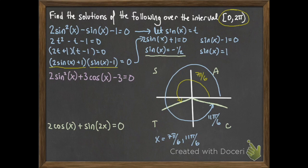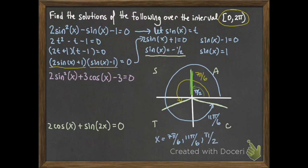For sine x equals 1, that only occurs at π/2. So the three solutions within 0 to 2π are x equals 7π/6, 11π/6, and π/2. When you plug any of these into the original equation, you get 0. That's the complete solution set for this interval.